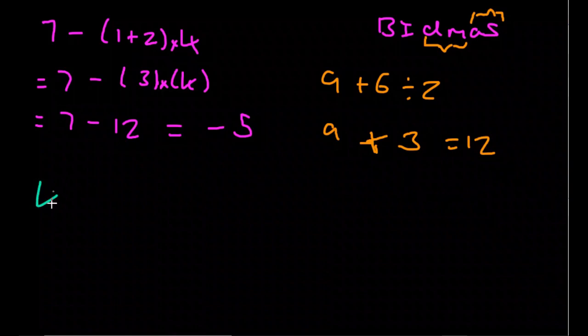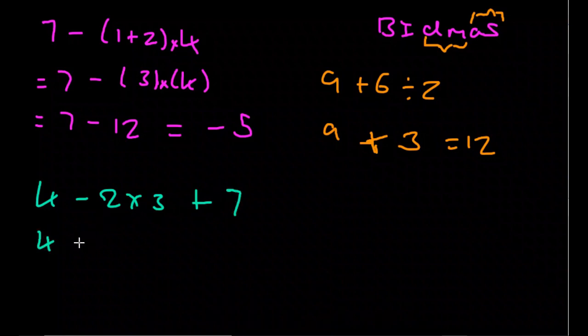Next one, we have 4 minus 2 times 3 plus 7. So we do this multiplication first, so we get 4 minus 6 plus 7. And like I say, with addition and subtraction, it doesn't matter which way around you do it. You can do it either way, but we will just work from left to right. So we get 4 minus 6, that's minus 2, plus 7, we get 5.